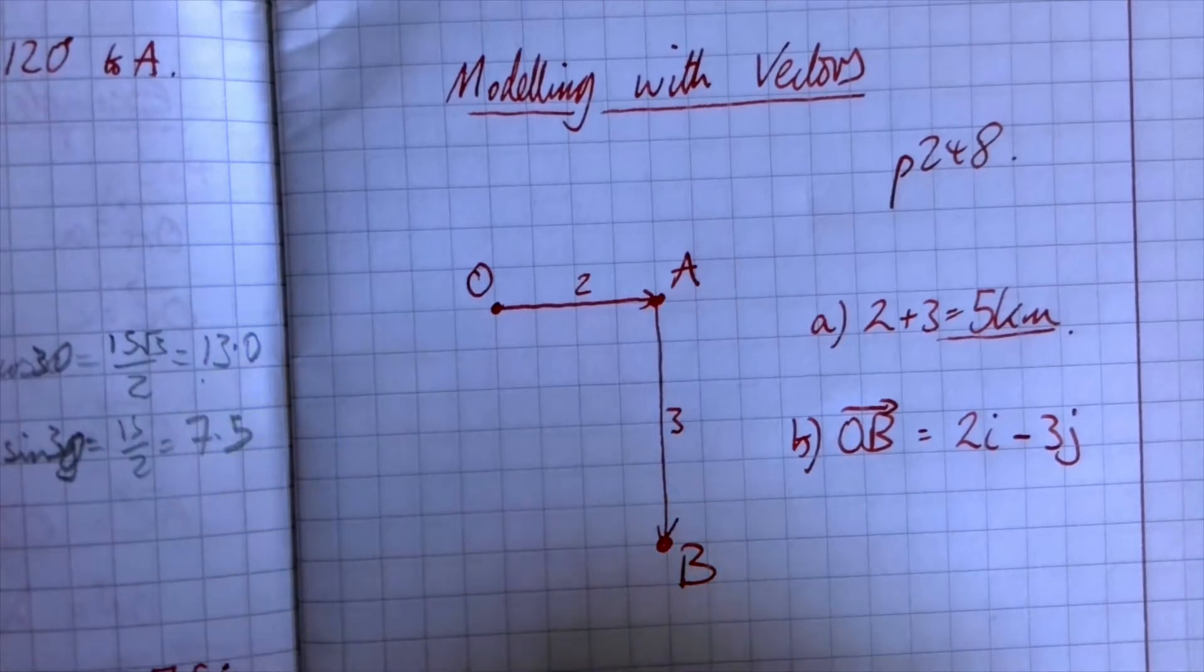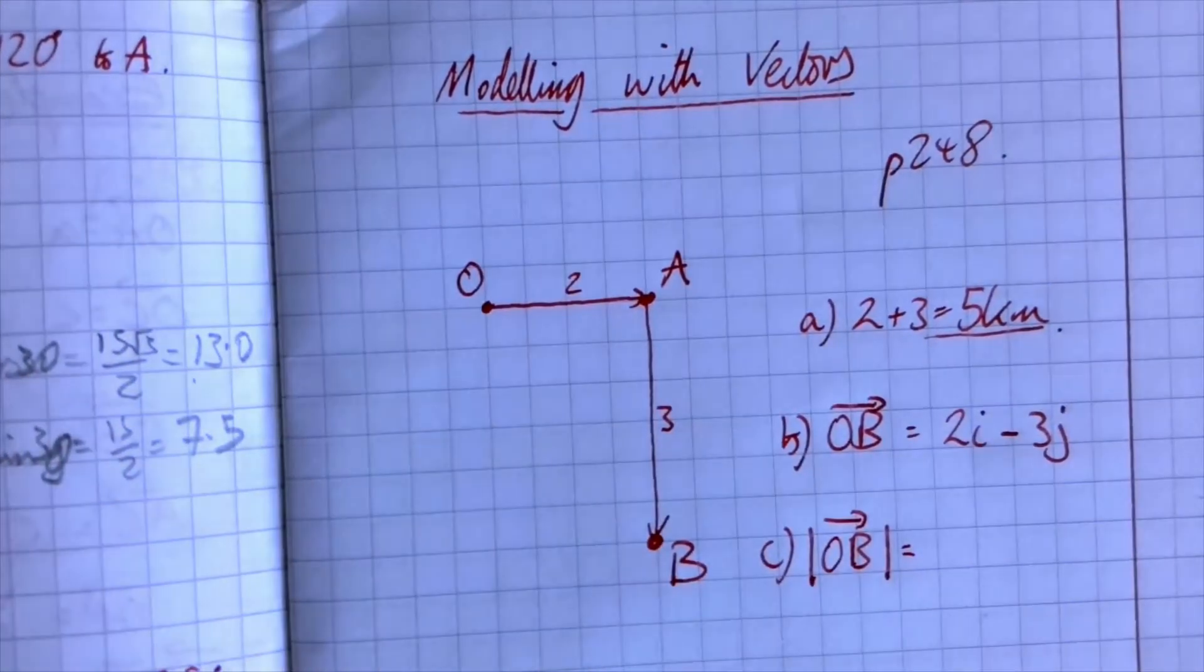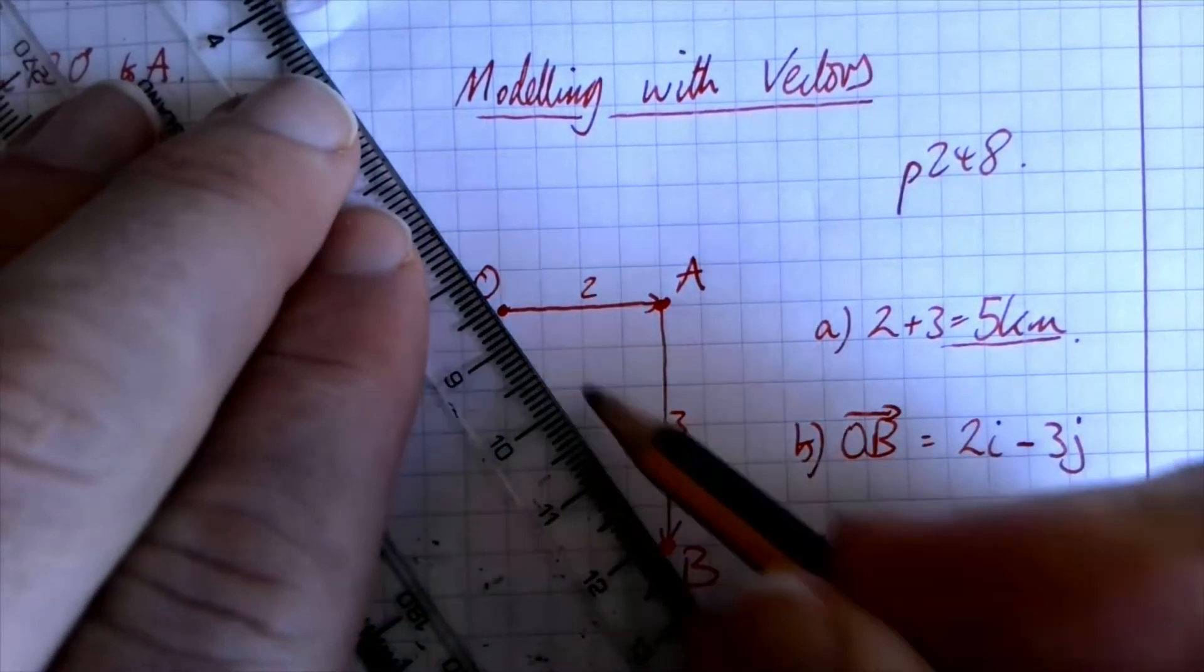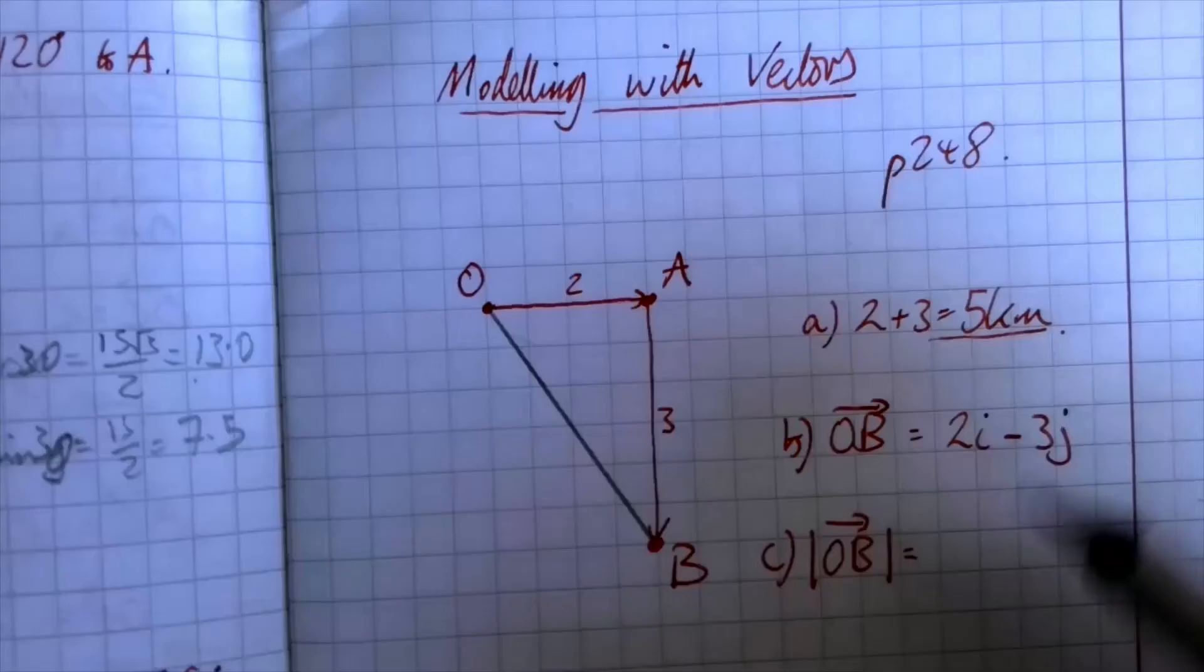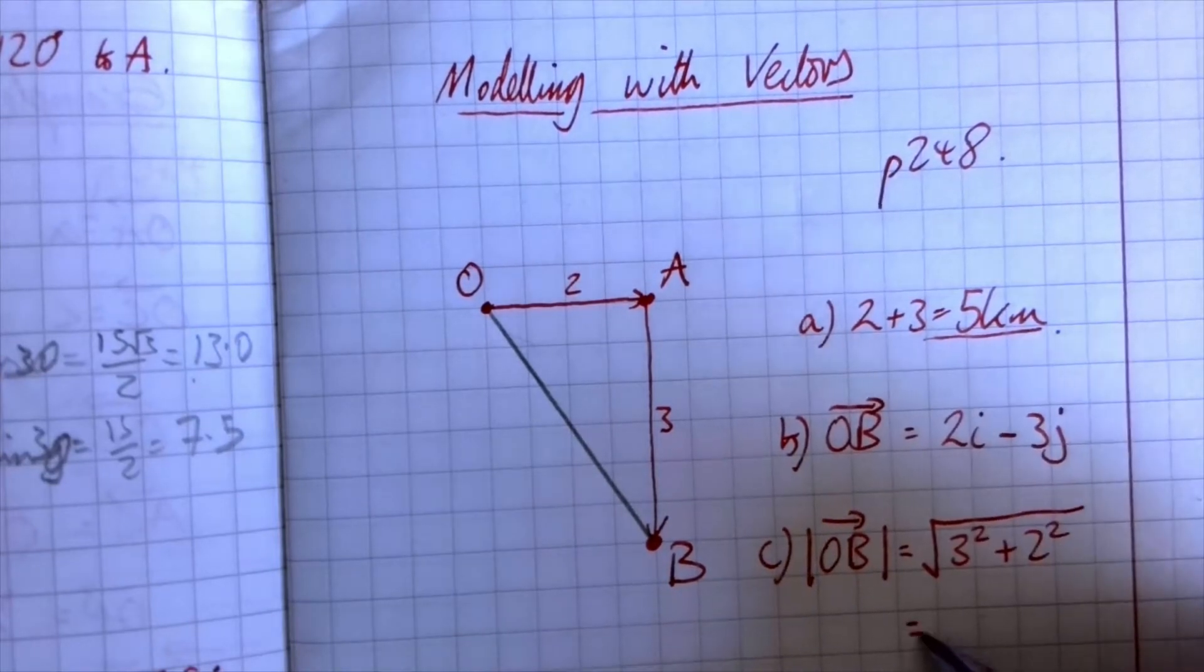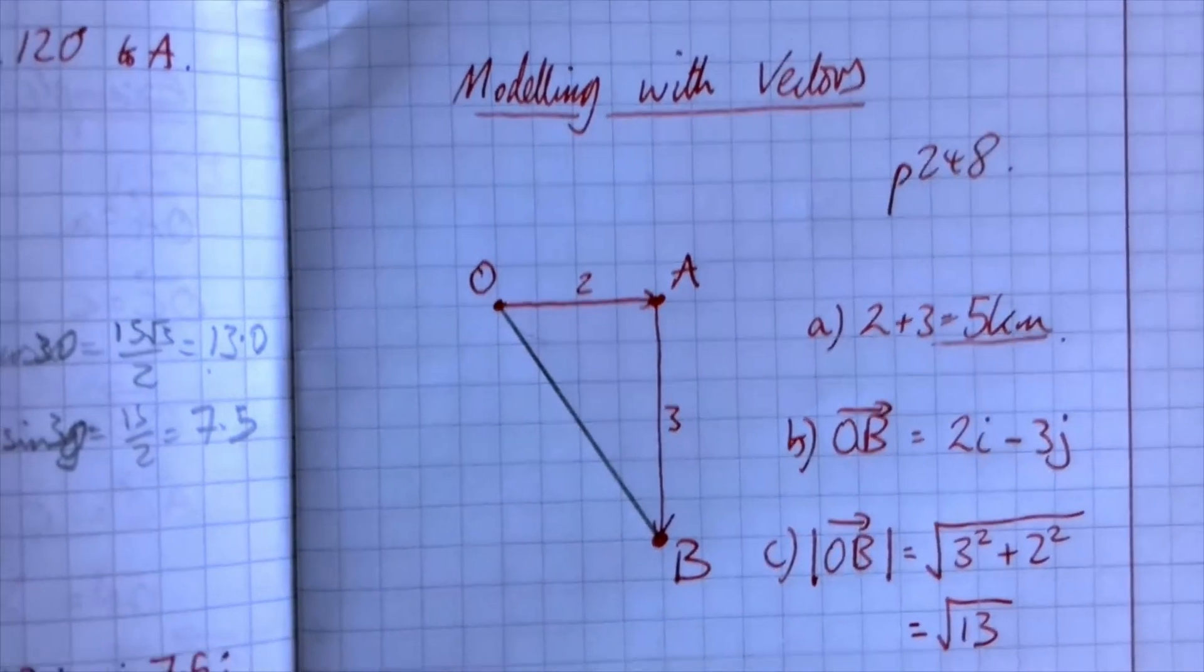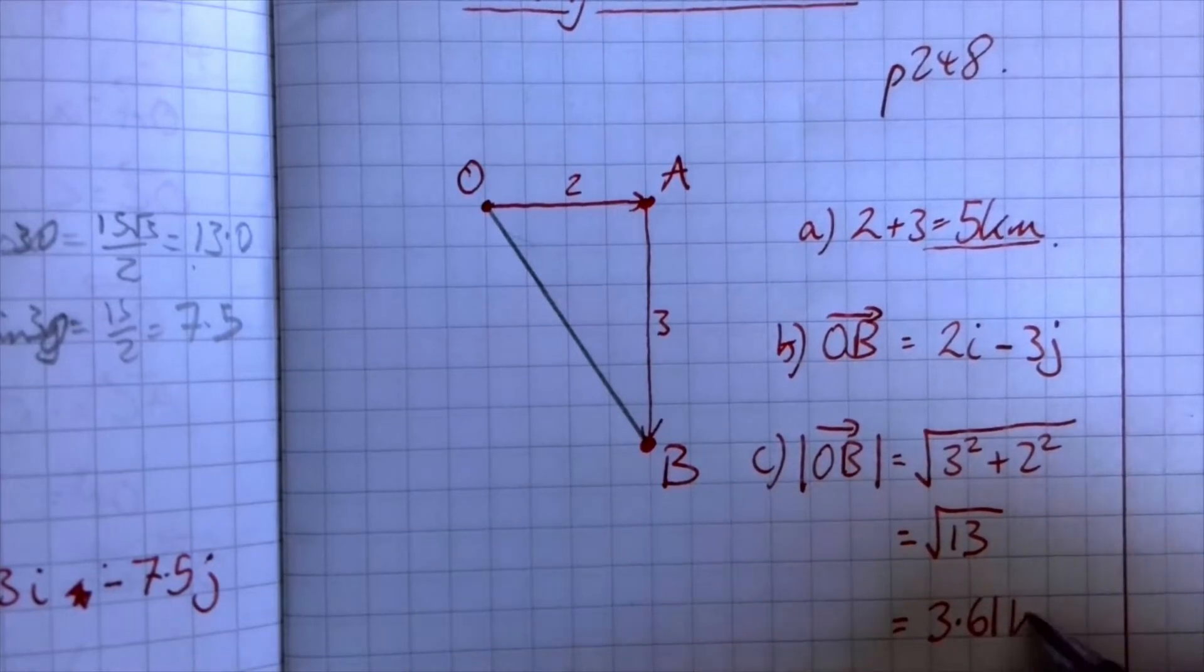Third one, the magnitude of OB means we're going from vector to a scalar quantity, which is the length that we are going all together. If we were to go straight from O to B, how far have we really gone? So that length there for which we can use our old friend Pythagoras. So that'll be the square root of 3² + 2². 9 + 4 = 13. So we are talking √13. And if they didn't ask you to leave it as an exact value, we should do that to three significant figures, which should come out as 3.61 kilometers.